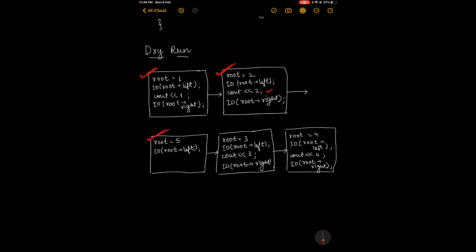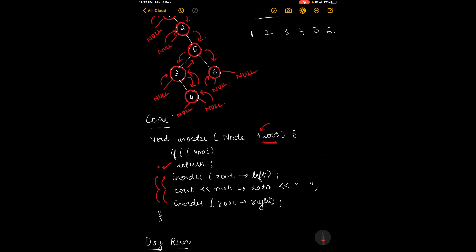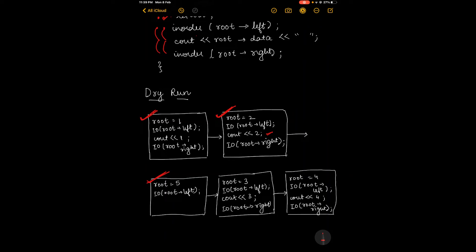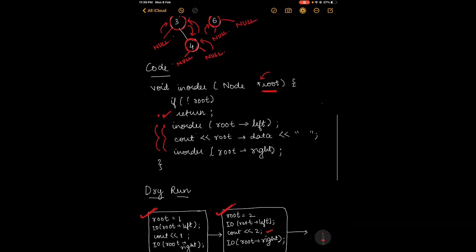Now root equals 5. We call in-order root left. The left child of 5 is 3 from the diagram. We go to the next block: root equals 3. We call in-order root left, which is null, so we cout 3. Then in-order root right: the right child of 3 is 4. Root equals 4. In-order root left is again null, so 4 will be printed.